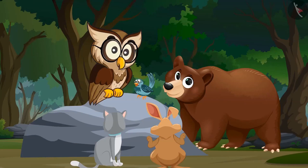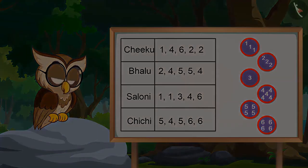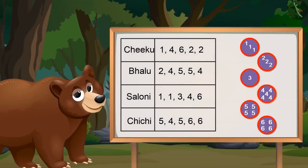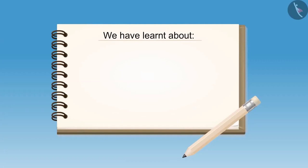Perfect! First of all, we made a collection of all the numbers. Did you notice how I have arranged all the numbers from one to six in a way that makes it easy to gather the information? Now tell me, which number came the highest number of times and which one the least? Four came the highest times — that is five times — and three came the least, only once. Absolutely right! So kids, in this video we have learnt about the collection and arrangement of data.